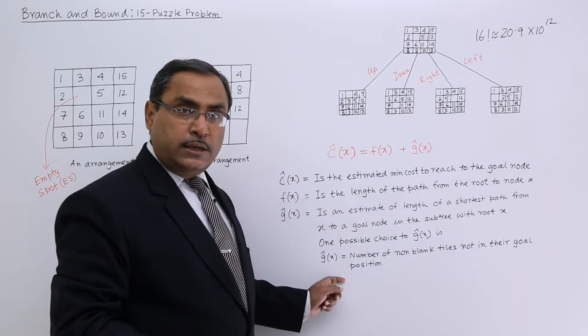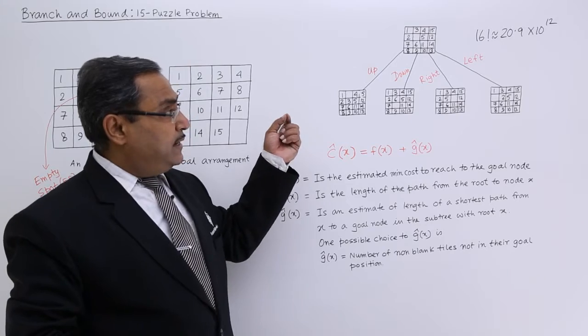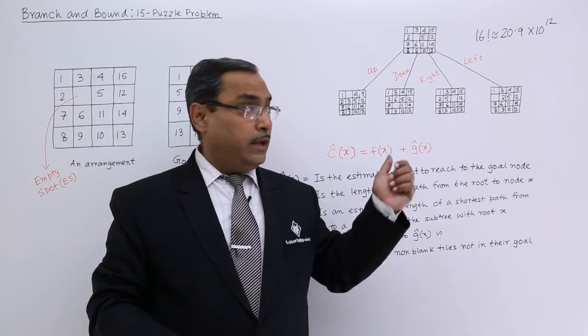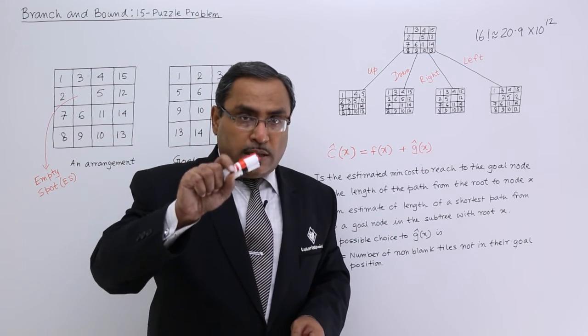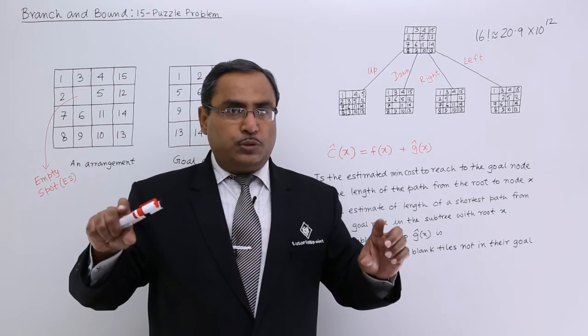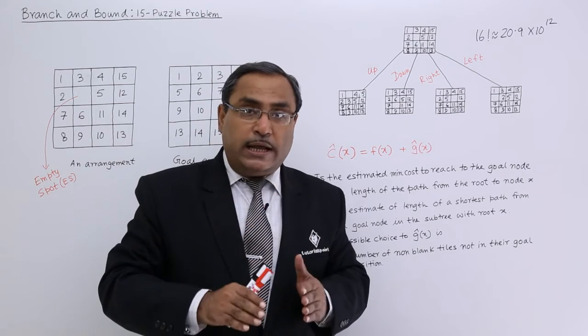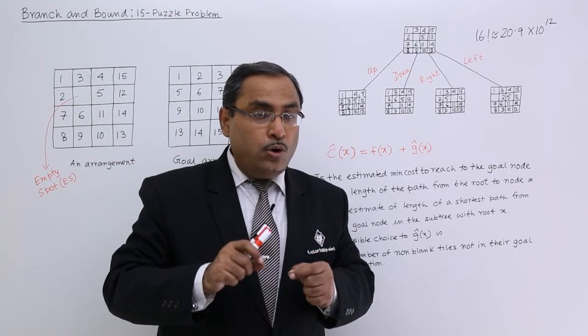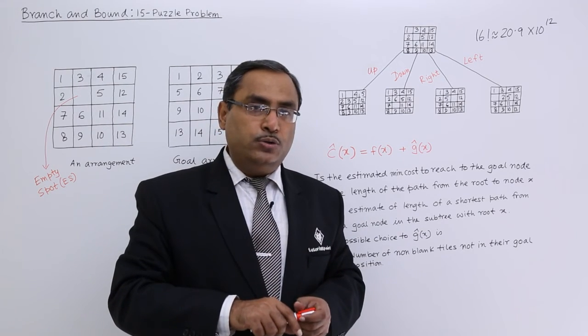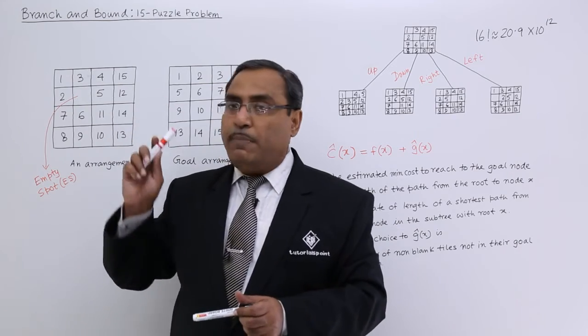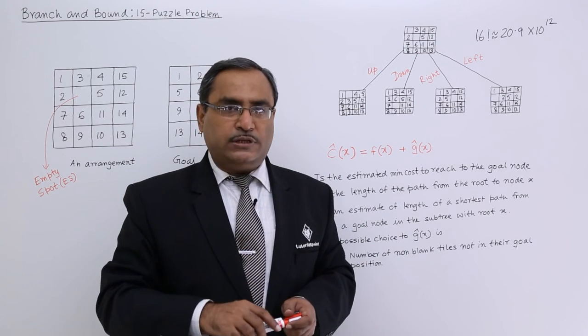Whatever we have discussed, I shall be using in our next video when I shall draw the state space tree for this particular 15 puzzle problem. I shall find out the most promising child element out of all possible children against a certain board arrangement. And from there I shall branch and try to get my goal node as soon as possible with minimum number of moves. Please watch the next video where we are going to apply this branch and bound algorithm on this 15 puzzle problem. Thanks for watching.